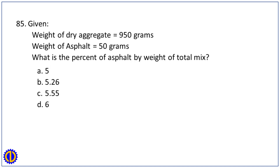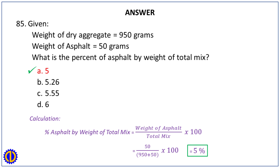Question 85. Given: weight of dry aggregate = 950 grams, weight of asphalt = 50 grams. What is the percent of asphalt by weight of total mix? A. 5. B. 5.26. C. 5.55. D. 6. Answer: A. 5. Calculation: percent asphalt by weight of total mix = (weight of asphalt / total weight of mix) × 100 = (50 / 1000) × 100 = 5%.